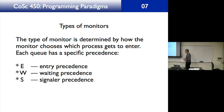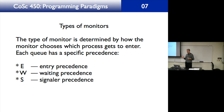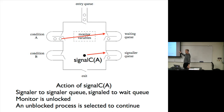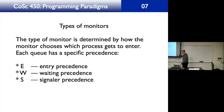What makes one kind of monitor different from another is how the monitor chooses which process gets to enter. We have three precedences: capital E is called the entry precedence. Looking at this figure, here's the entry queue, and we can choose from either the entry queue or the waiting queue.